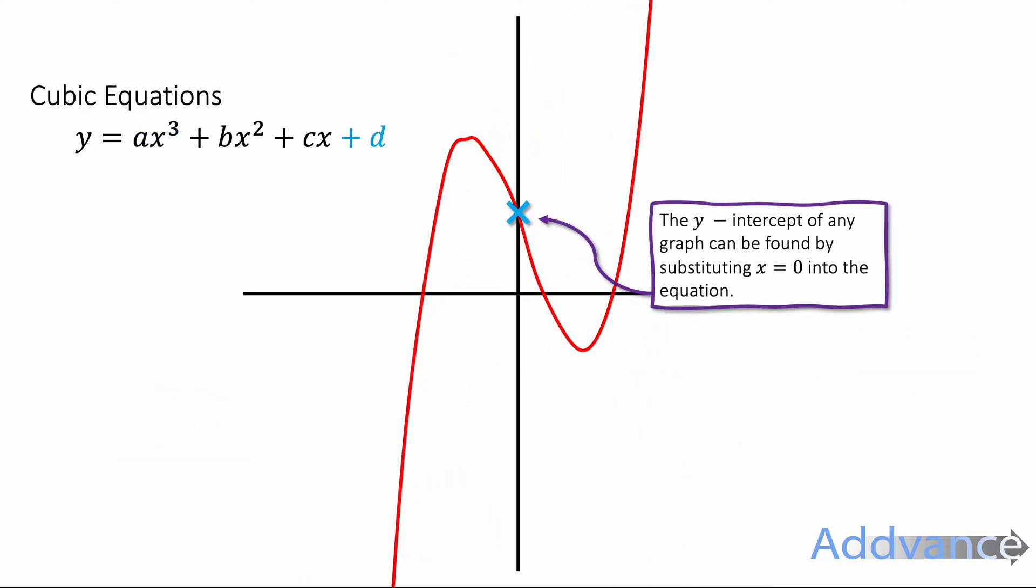We can also find the y-intercept really easily of a graph by substituting x = 0 into the equation. When you substitute x = 0 into the equation, the first three parts, the x³, the x², and the x, all disappear because they're all zero. And all you're left with is +d on the end. So that d on the end will always give you the y-intercept. So the y-intercept of any cubic graph can be found by just looking at the +d, just the number added on at the end. And so the coordinate of that will be (0, d).